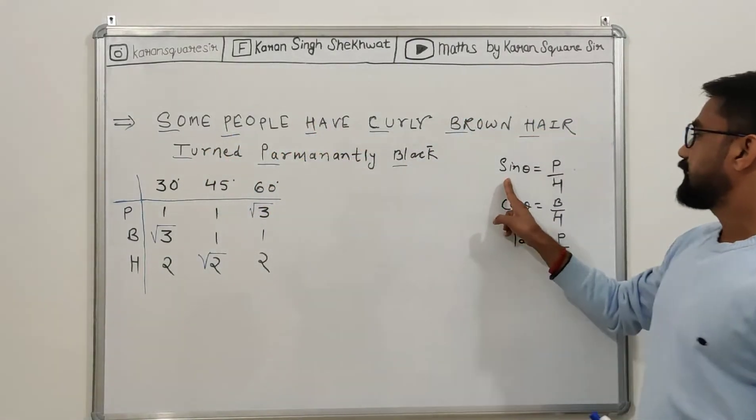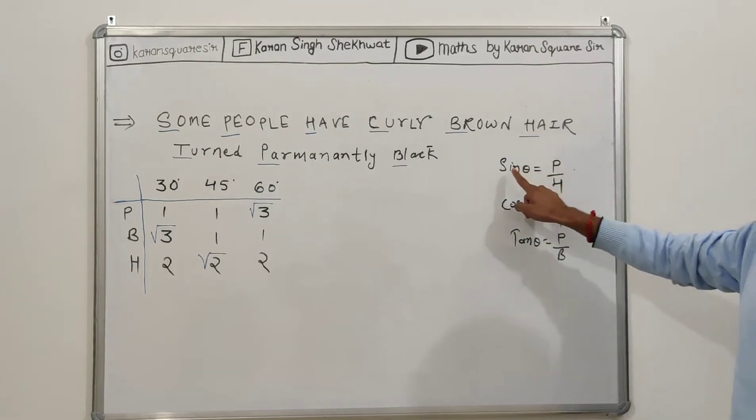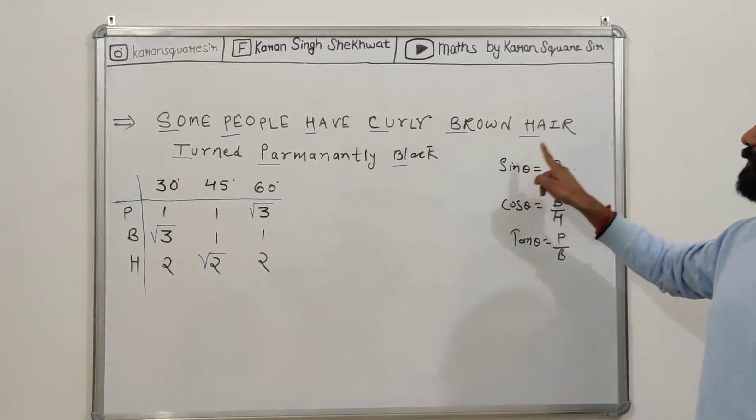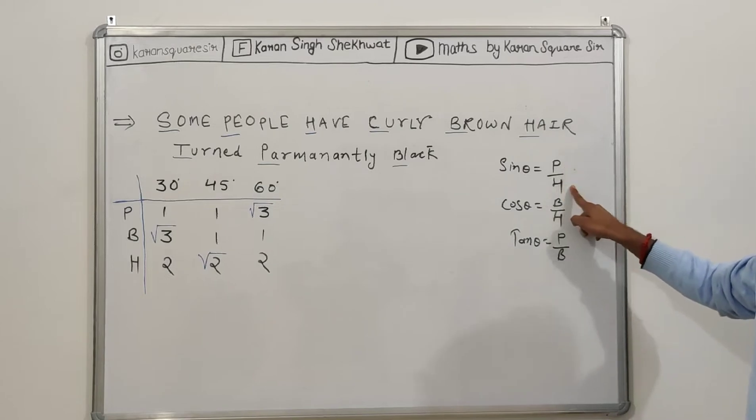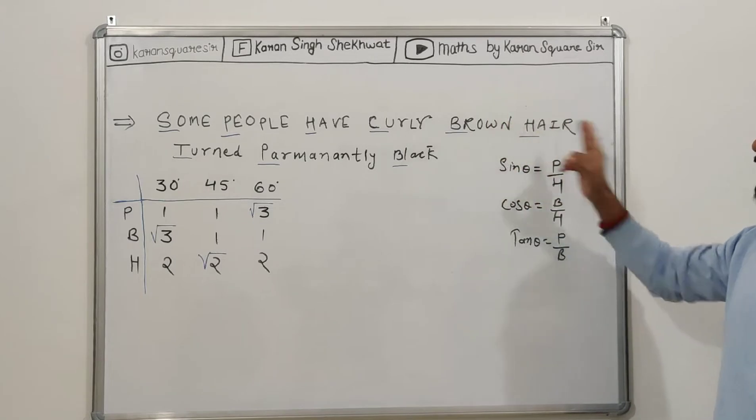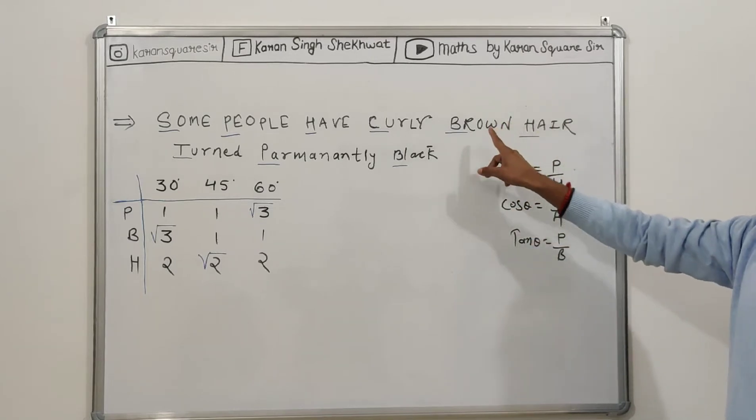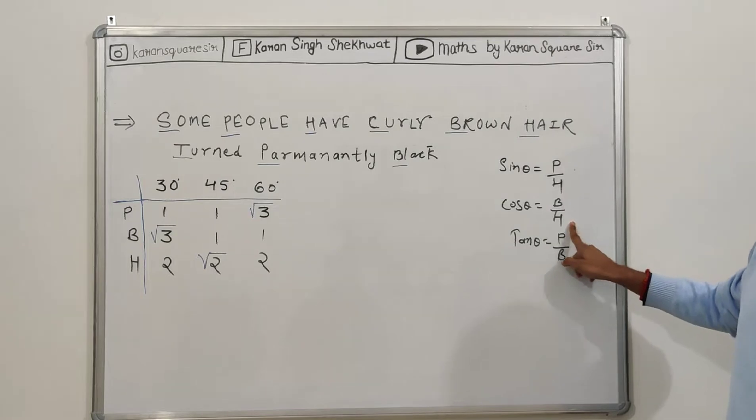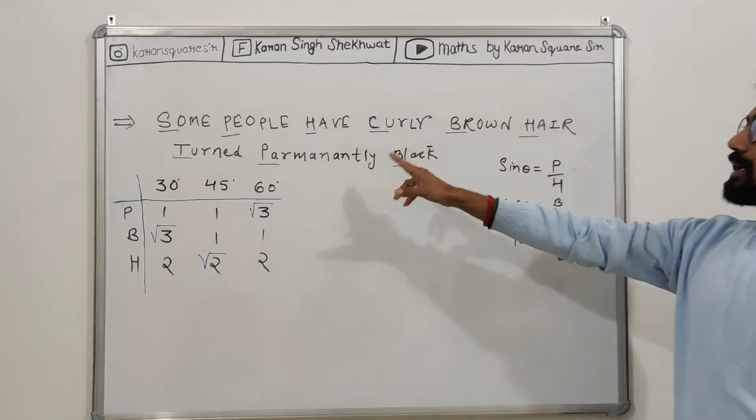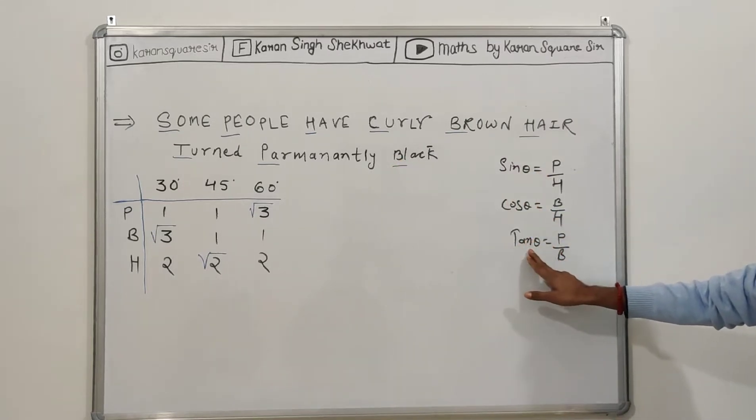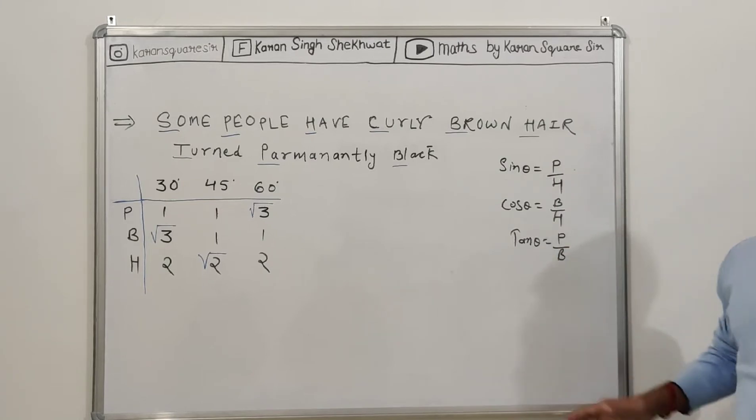Some people have - so sin theta is equal to perpendicular upon hypotenuse. So 'some' for sin theta, 'people' for perpendicular, and 'have' means hypotenuse. Sin theta equals p upon h. And next is 'curly brown hair', so cos theta, 'base' is brown, and 'hair' for hypotenuse. Therefore, cos theta is equal to base upon hypotenuse. And next, 'turn permanently black' - so 'turn' for tan theta, 'permanently' means perpendicular, and 'black' means base. So tan theta is equal to p upon b.